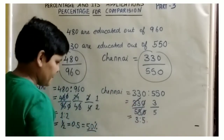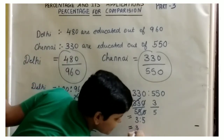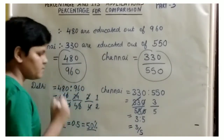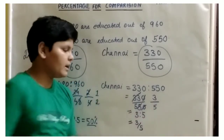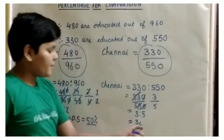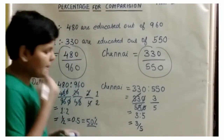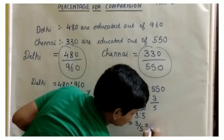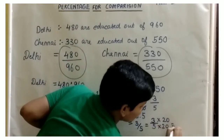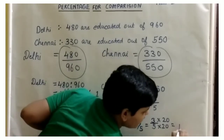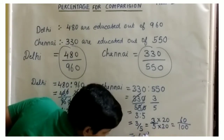Now we have the value for Chennai: 3 is to 5 becomes the fraction 3 by 5. We convert this fraction into a percentage by multiplying numerator and denominator by 20: 5 times 20 is 100, and 3 times 20 is 60. So Chennai equals 60%.